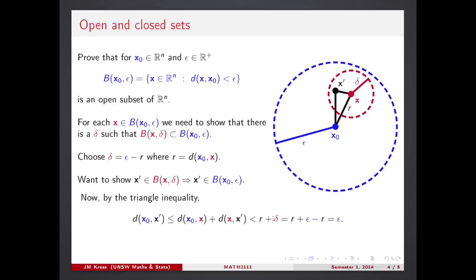From x to x dash, that's the delta distance. Yeah, because x dash comes from this ball. Now, if you just replace what the delta was chosen for, you end up with epsilon.